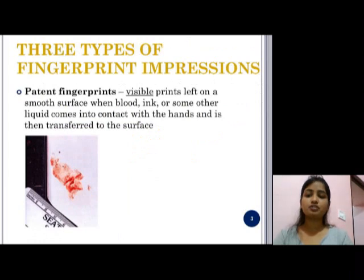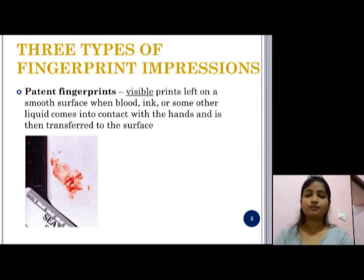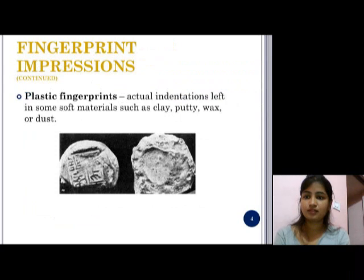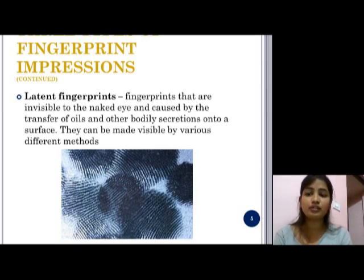There are three types of fingerprint impressions. First, patent fingerprints: visible prints left on a smooth surface when blood, ink, or some other liquids come into contact with hands and are transferred to the surface. Second, plastic fingerprints: actual indentations left in some soft material like clay. Third, latent fingerprints: fingerprints that are invisible to the naked eye, caused by transfer of oils and other bodily secretions onto a surface. They can be made visible by various different methods.